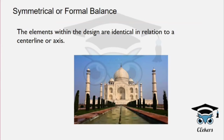With symmetrical or formal balance, we move along the center line. On the right side, we find the correct symmetric vision — the elements are identical on both sides. This line is symmetric — it is a symmetrical balance.